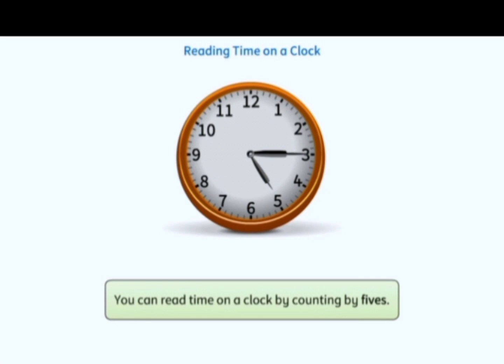As the minute hand of the clock moves from one number to the next number, we say 5 minutes have passed. You can read time on a clock by counting by 5s.